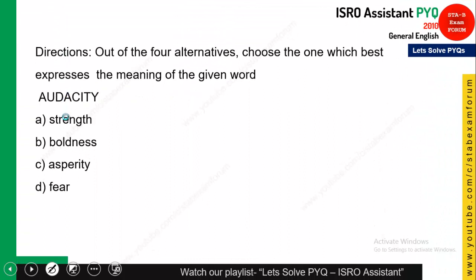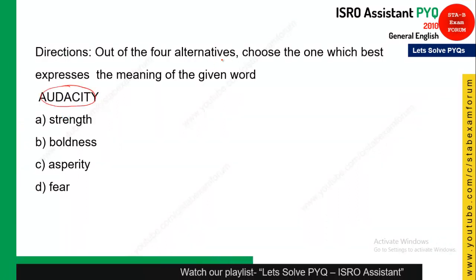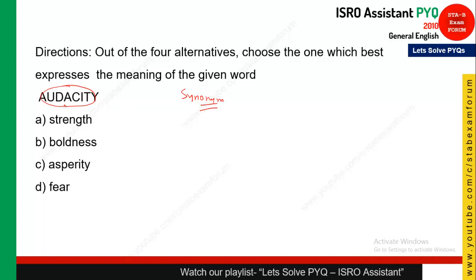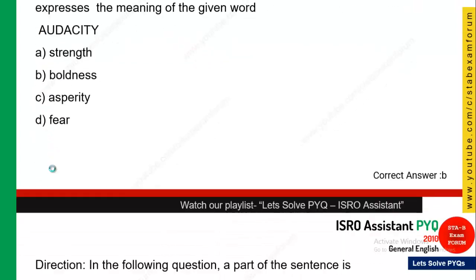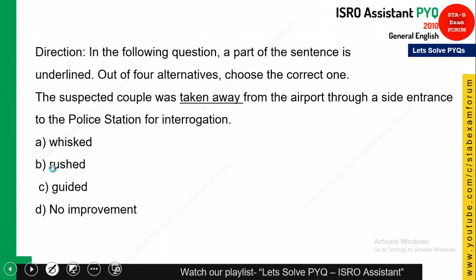The next question again asks for a synonym. The word is 'audacity.' The synonym of audacity is boldness — if you are bold, you have the audacity to do something. The opposite of audacity is fear. So option B is the correct answer.